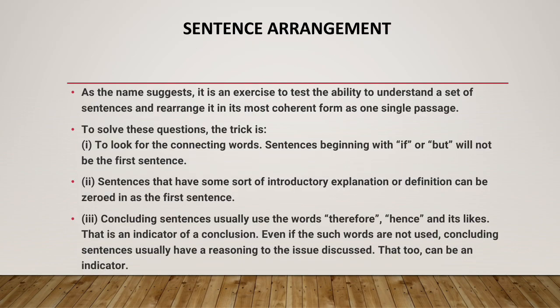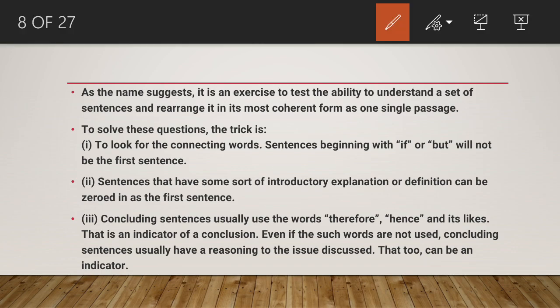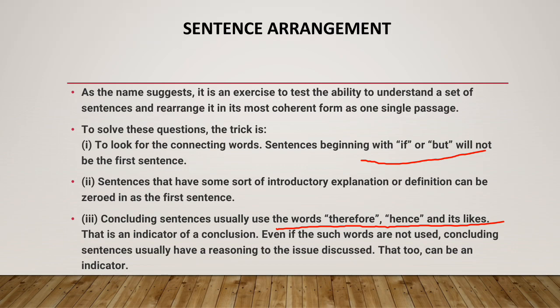The next portion is sentence arrangement. To practice sentence arrangement, you must understand that there are many parts in English grammar that help you understand the breaks of a sentence. For example, words like 'if' or 'but' — how to use them — help you frame a sentence. You can also use words like 'therefore' and 'hence'; these keywords will help you frame a sentence from the jumbled sentence given to you. Please try to focus on these questions and read them multiple times before answering.